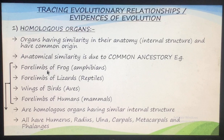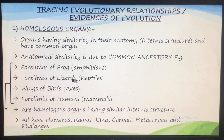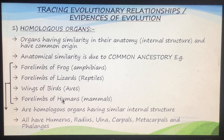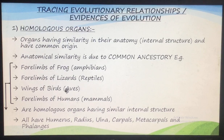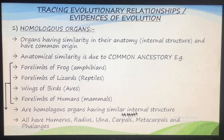Now let us see an example. The four limbs of the frog - frog is an amphibian; the four limbs of the lizard - lizard is a reptile; the wings of birds - birds belong to Aves; and the four limbs of humans - humans belong to class Mammalia. All these four limbs of all these organisms are homologous organs, because if we look at their internal structure, that is the same.